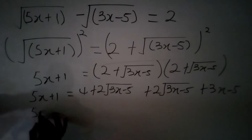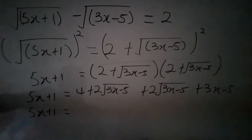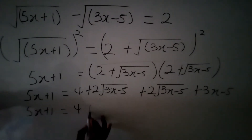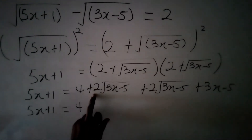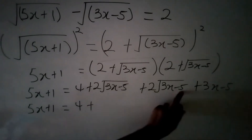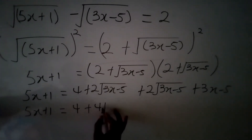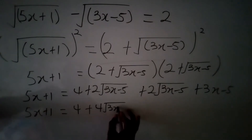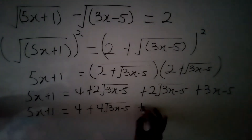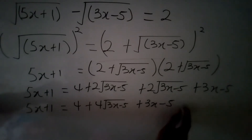Good. So 5x plus 1 equals 4 plus — having 2 root of 3x minus 5 added to 2 root of 3x minus 5, which simply gives us 4 root of 3x minus 5 — plus 3x minus 5.